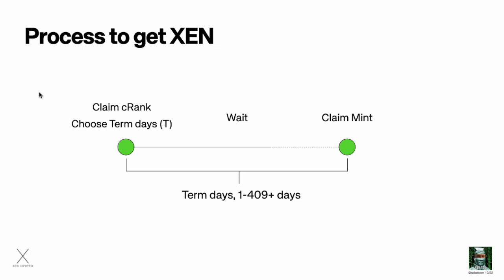So this is how the process of getting free Zen works. The process requires you to interact two times with the protocol. First you claim your C rank, and when you do you will also choose a time in the future when you want to mint Zen. The longer out in the future you choose, the more Zen you will get. You can choose anything from one day to currently 409 days. Then you simply wait, come back at the chosen date, and do your actual mint. Just make sure you claim your mint within 24 hours — if you're late there will be penalties.